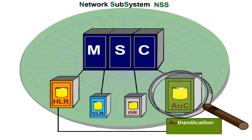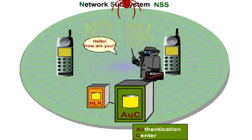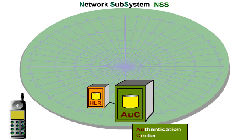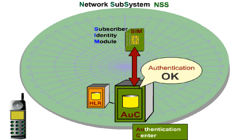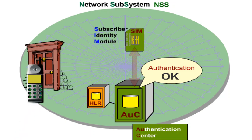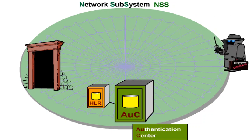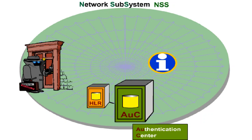The authentication centre, AUC, contains the customer data necessary to protect connections against unauthorised access, and is mostly integral to the HLR. The AUC checks the information stored in the subscriber identity module, that is, the SIM card, for correspondence with its own register. If the data proves to be identical, the authentication of the subscriber is successful, and he's given permission to enter the network. If the SIM card is stolen, authorization to access the network is disabled very easily via the AUC. Additionally, the AUC provides necessary information to cipher the air interface.